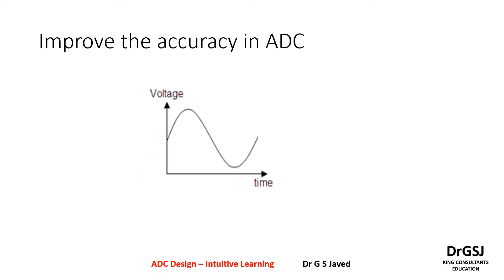So how do we do that? The simple way is to find more samples that can be taken in the time axis, or you can take more samples on the y-axis in the voltage axis. The smaller the time resolution gives higher accuracy or better accuracy.